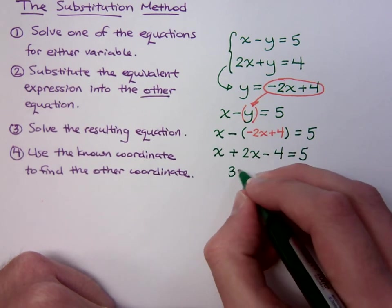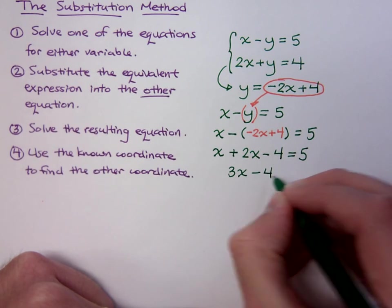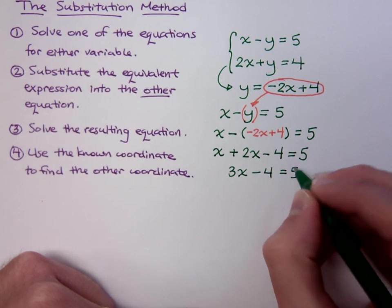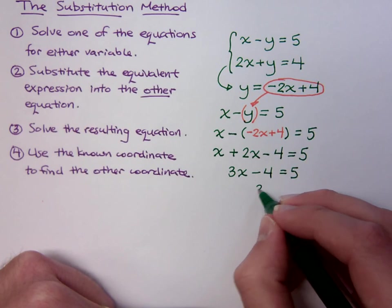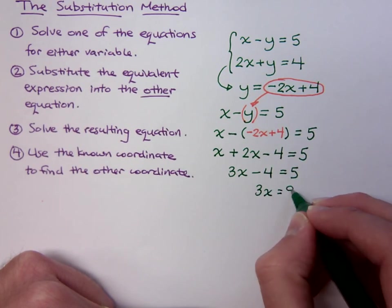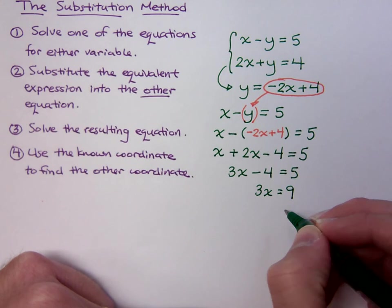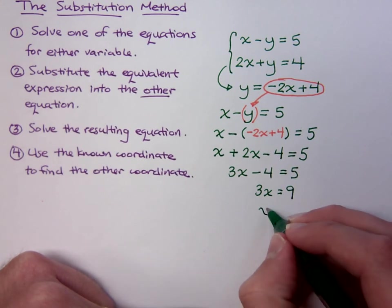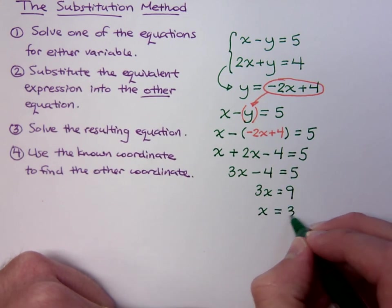Well, combine like terms. 3x minus 4 equals 5. If I add the 4 over, so that's a plus 4 over here, so that becomes a 9. And divide both sides by 3, I get x equals 3.